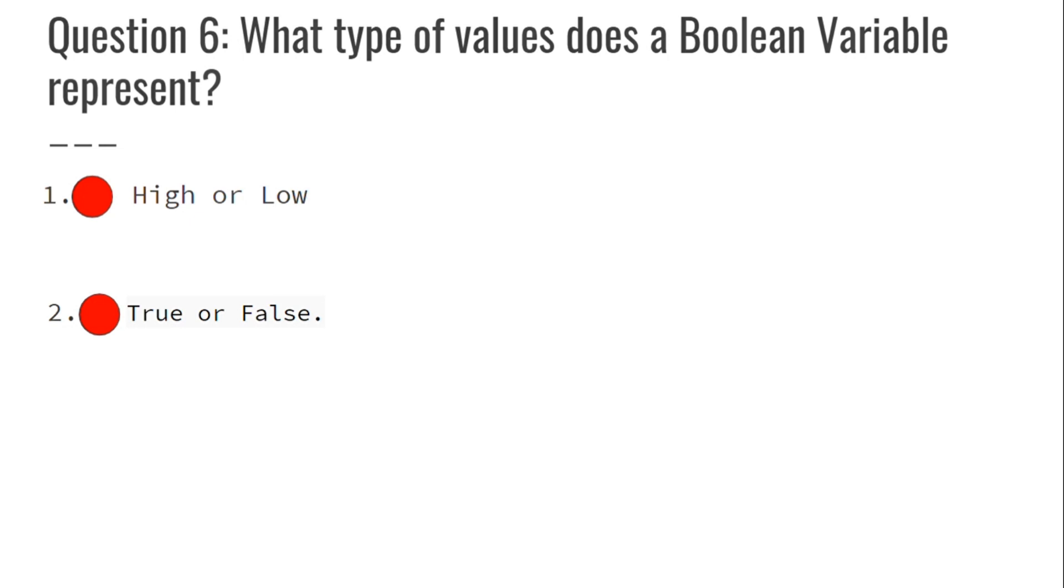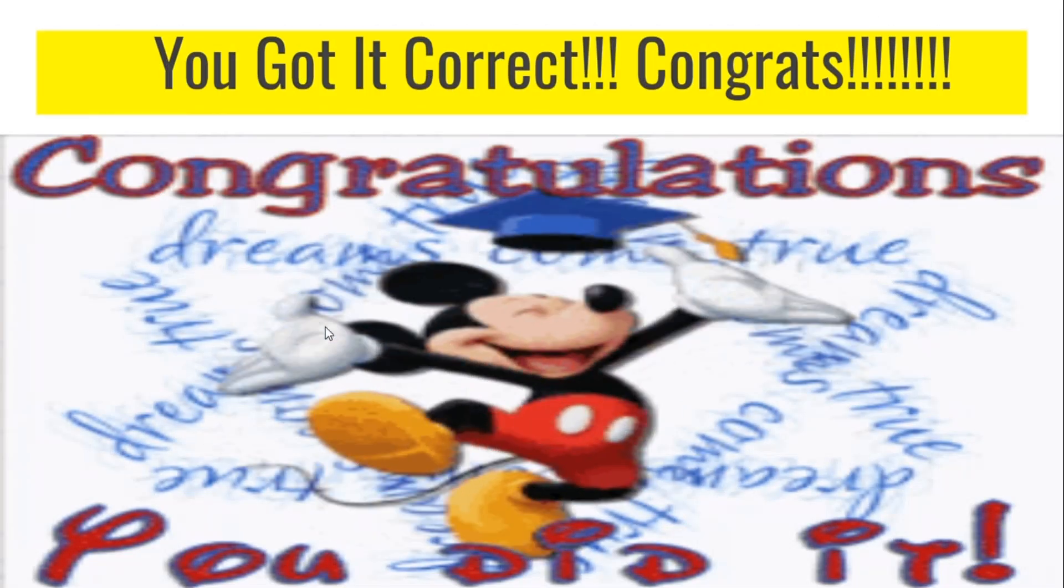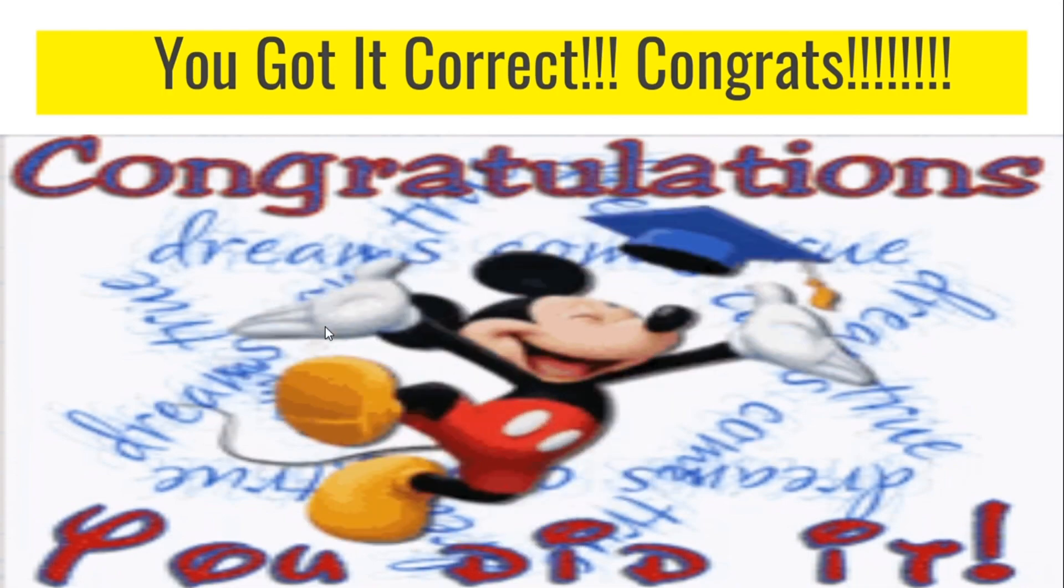My turn! Question 6: What type of value does a boolean variable represent? Number 1. High or low? Number 2. True or false? I think I'll go with true or false. Okay! Is it correct? Let's check. Yay! I got it correct! You've been doing really good!